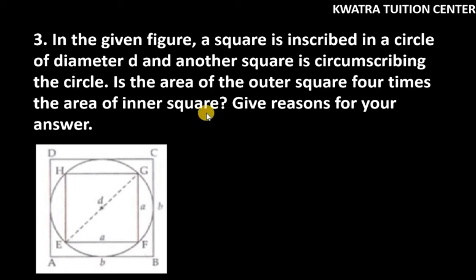Let's start with question number 3. It says, in the given figure, a square is inscribed in a circle of diameter d. You can see that we have a circle and we have a square in it, that is EFGH.